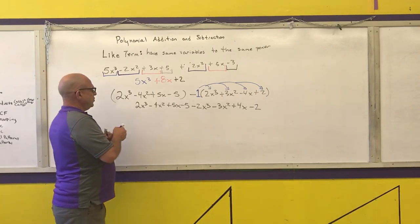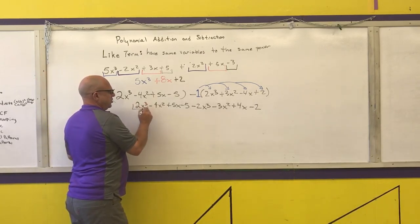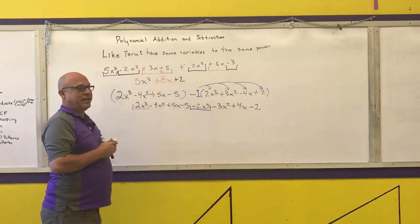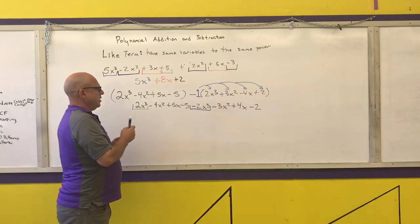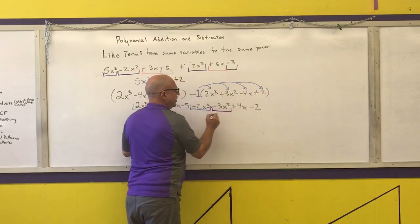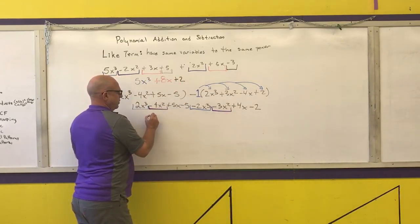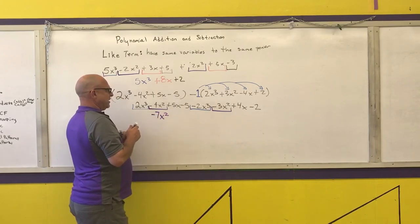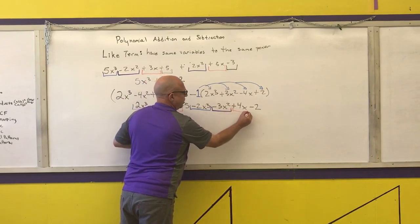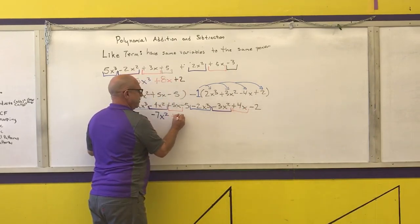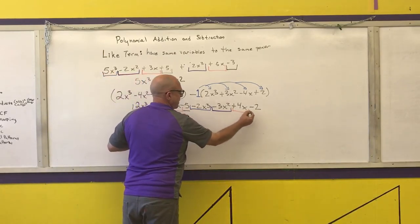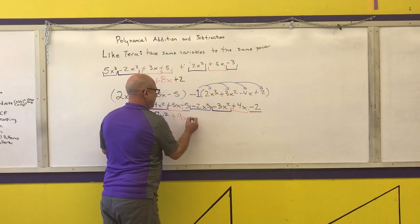Once you distribute, it is now a basic addition problem, which just means combine the like terms. The highest degree terms are my cubes. I have two of them minus two of them, so I have zero of them. So my final answer isn't going to have any cubes. Then my squareds, negative 4 minus 3 is negative 7x squared. My x's, I have 5 plus 4, which is 9. And then my constant terms, I have negative 5 minus 2, which is minus 7.